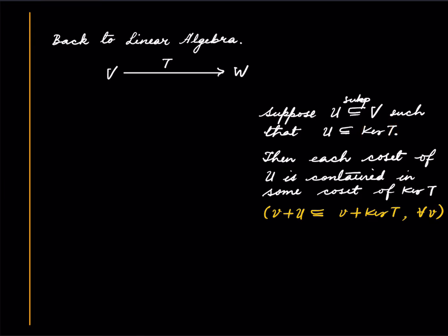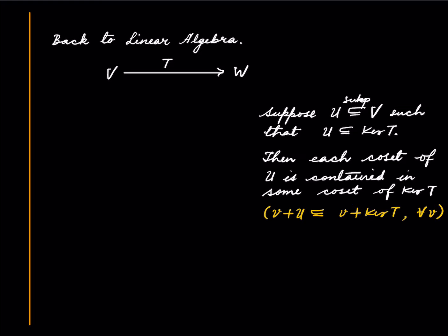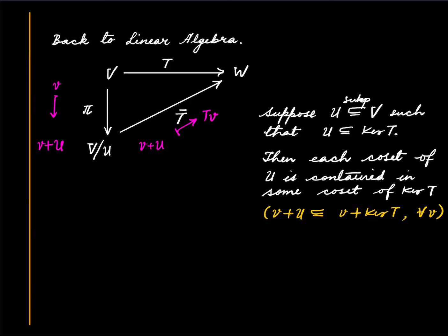Recall: if U is a subspace of V we define a relation on V by saying v1 tilde v2 if their difference is in U, which is equivalent to v1 and v2 being in the same coset of U. By what we just saw in the set theoretic case, we get a map T bar from V mod U to W, which we can also denote T tilde. The projection map takes v to its coset, and T bar sends v plus U to Tv. This diagram commutes for set theoretic reasons, but crucially T bar is also linear. This is a strengthening of the first isomorphism theorem — this map may not be injective; it will be injective if and only if U equals the kernel.